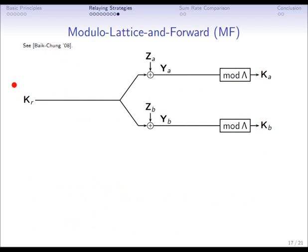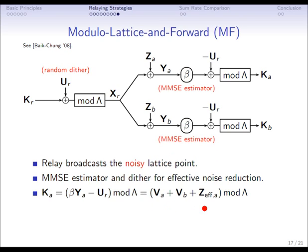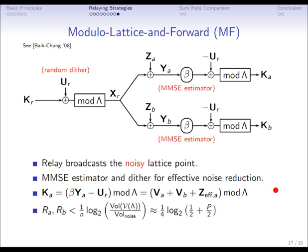In the broadcast phase, the relay broadcasts the noisy lattice point K_R, and we apply the same techniques — random dithering and MMSE estimation. We can compute what is received at the two users: it is just the two lattice points linearly superimposed plus noise. By optimizing alpha and beta to find their optimal values and calculating the effective noise power, we can bound the achievable rate.